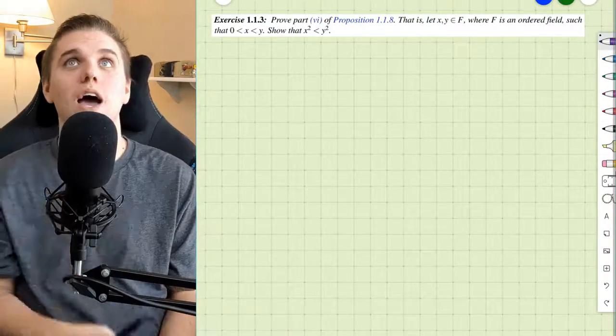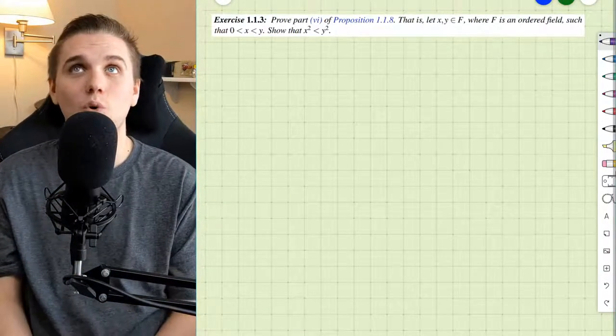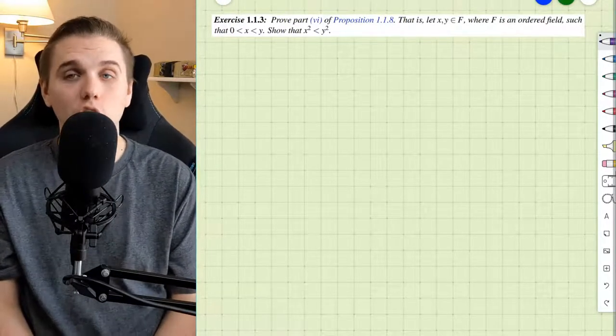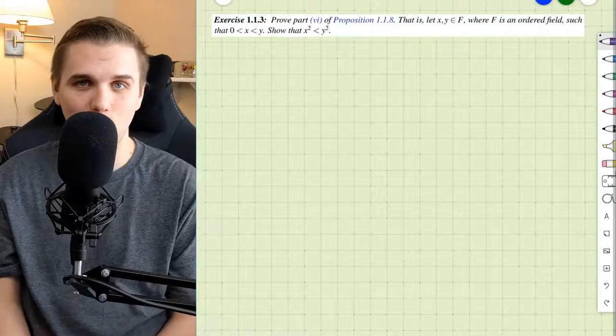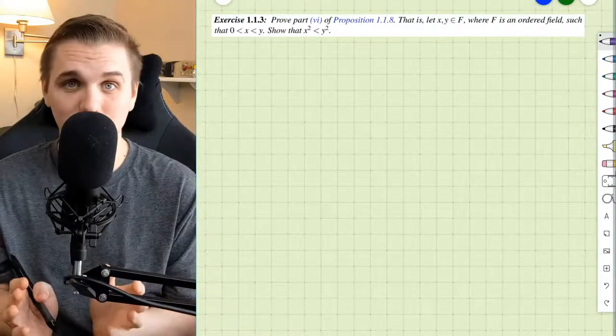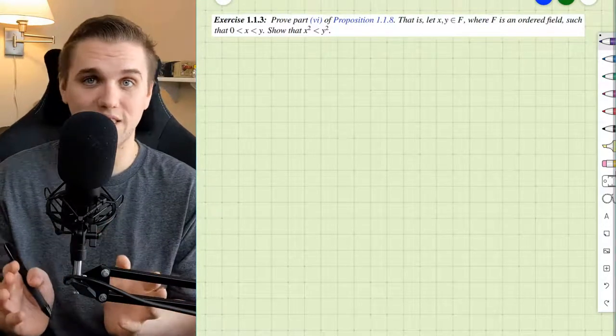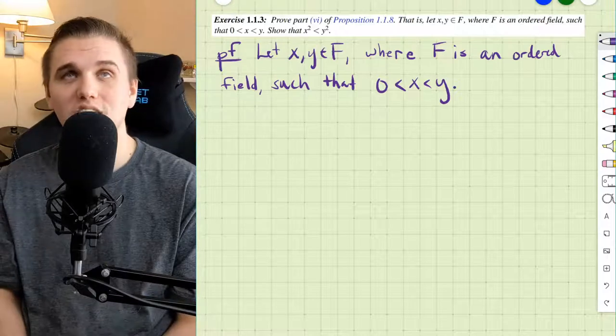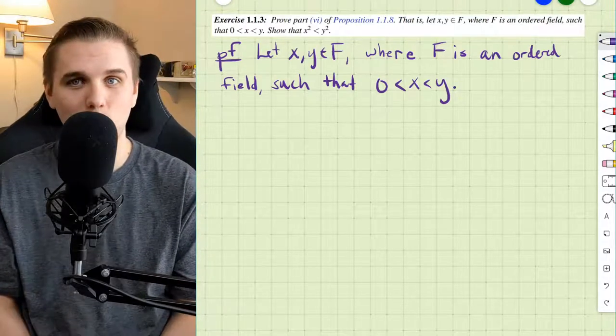Alright, so this problem says let x and y be in F where F is an ordered field such that 0 is less than x is less than y. Show that x squared is less than y squared. Now, this is going to be a direct proof, and so let's first start by listing off our hypotheses. So we're going to let x and y be in F where F is an ordered field such that 0 is less than x is less than y.